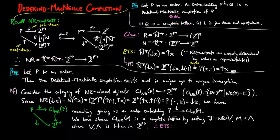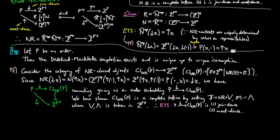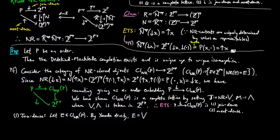Therefore, it remains to show that the lower segment functor is join dense and meet dense. To show it is join dense, let E be an NR-closed object. By Yoneda, E equals the join of the down-segment on X, where the down-segment on X is less than or equal to E. Therefore, E = NR(E) = NR-join of down-segment on X = J of down-segment on X, where down-segment on X is less than or equal to E.